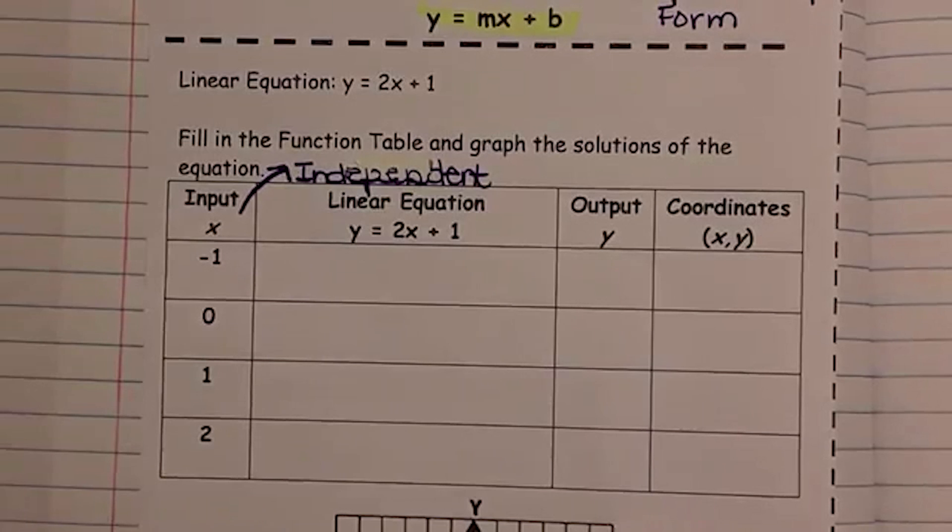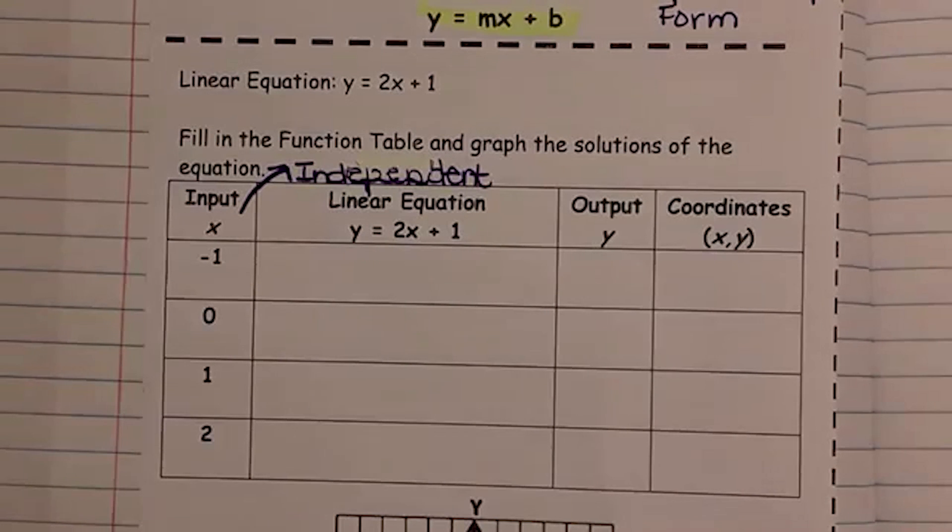We usually use some famous x's, is what I call them, is negative 1, 0, 1, and 2. If you have five numbers that they would like you to have, then we normally throw in the negative 2.